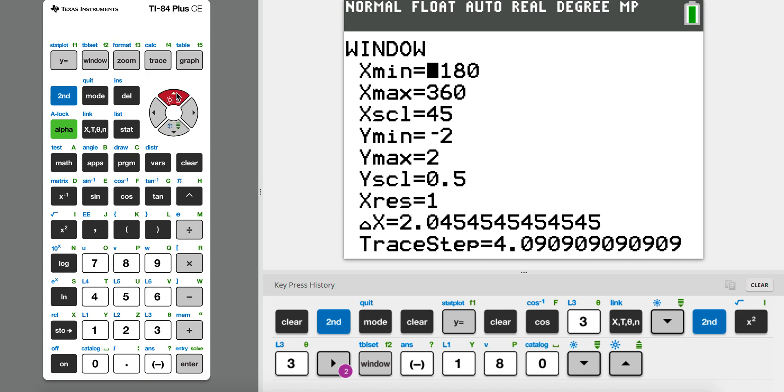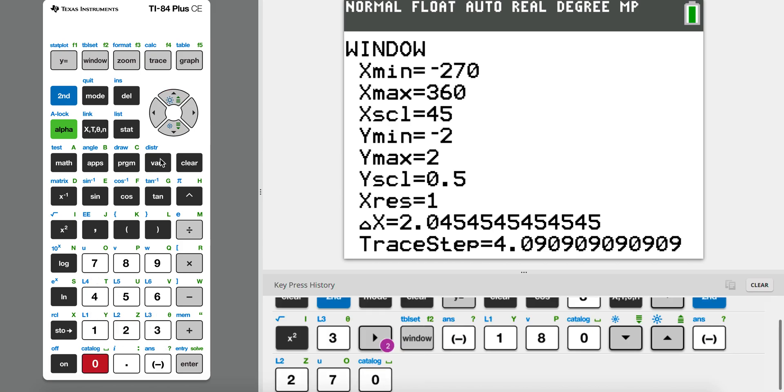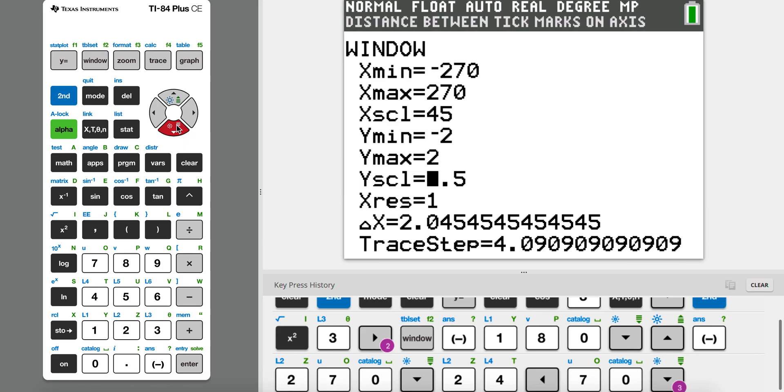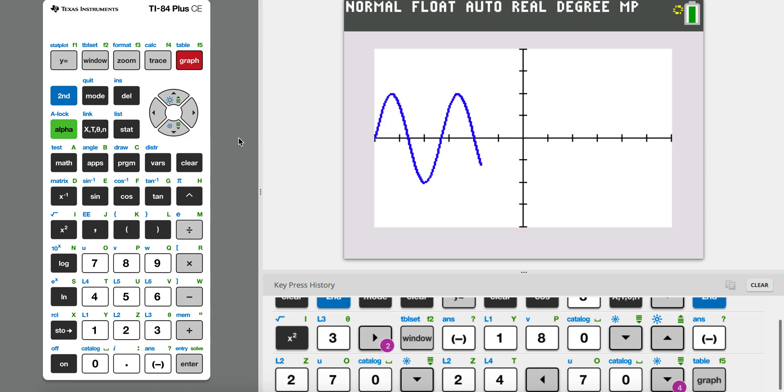Which means I'm just going to set my window. I want my window to be from negative 180. Let's just add a bit more so that we can actually see the 180. And let's just go to 270 as well. Add a 45 scale. We can keep the Y as such.